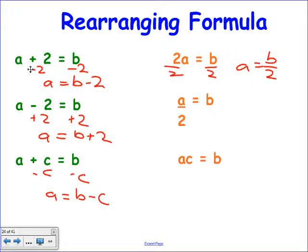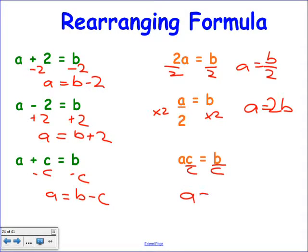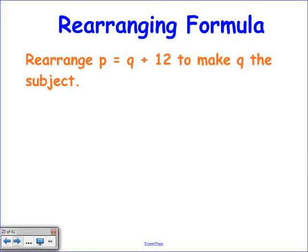I've got A divided by 2 equals B. To do the opposite, multiply both sides by 2: A equals 2B. That's the one they like to give you — because they're trying to trick you. Let's finish with A times C equals B — divide by C on both sides. Because AC means A times C, the opposite is dividing by C. So A equals B divided by C. Rearrange P equals Q plus 12 to make Q the subject: minus 12 on both sides, Q equals P minus 12.